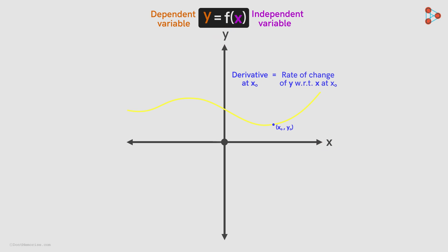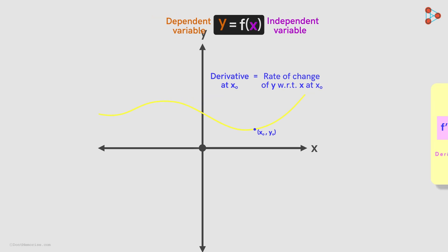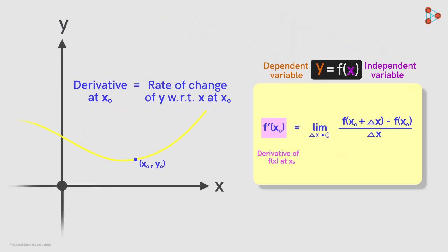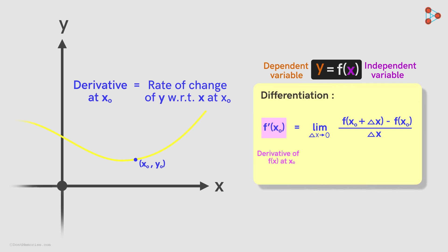In our previous video, we saw how to find the derivative of a function. The whole process is summarized here, and it is called differentiation. This ratio here is called the average rate of change between two values of x, which are x0 and x0 plus delta x.